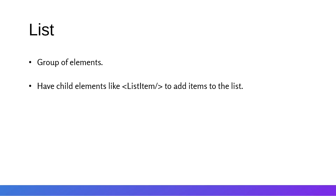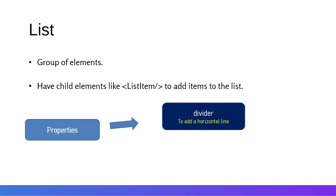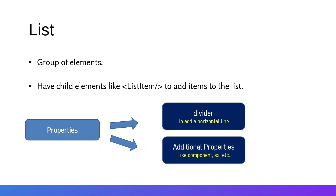The child components include list item buttons, icons, and text. The list has a divider property in the list item button which adds a horizontal line between elements. There is also a component prop to provide a new component to the list, like a link component, and an sx prop for styling.